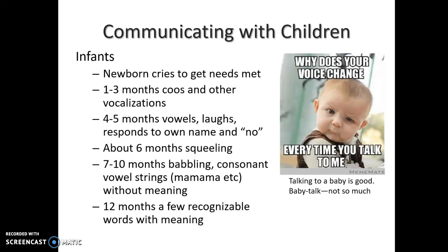At four to five months, infants really develop different vowel sounds — the oohs and the ahs — and they're also learning to laugh and know their own name. They understand the word 'no' by four to five months. Around six months they start squealing, either from laughing or when they're mad. By seven to ten months they start babbling, putting consonant and vowel sounds together like 'ma-ma-ma' or 'da-da-da,' but it has no meaning yet.